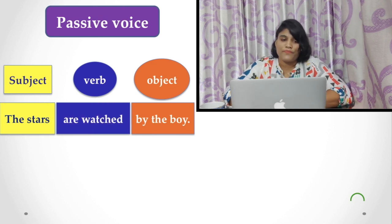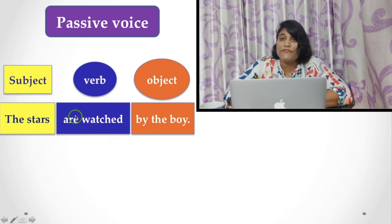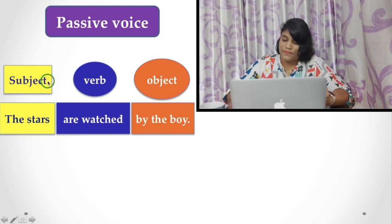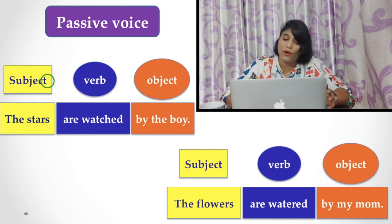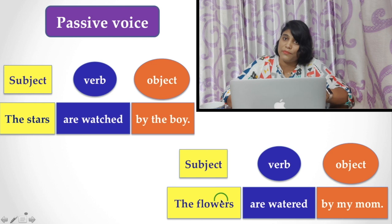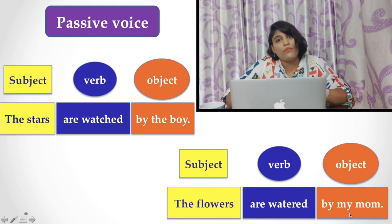Now look at the passive voice sentences. The stars are watched by the boy. In this example, the stars are the subject. The verb takes a be-verb — because the sentence is in simple present tense, 'are' is used — and the object becomes 'the boy,' which was the subject in the active voice. Similarly, the flowers are watered by my mom. The flowers become the subject, 'are watered' — since flowers is plural, 'are' is used — and the participle form of the verb 'water' is used, with 'my mom' as the object.